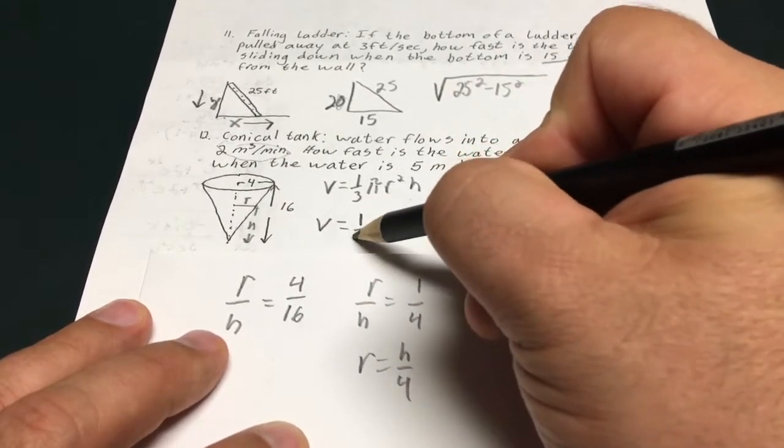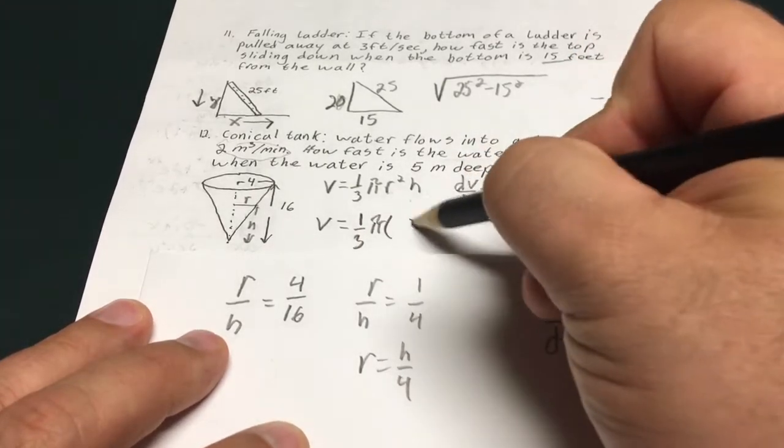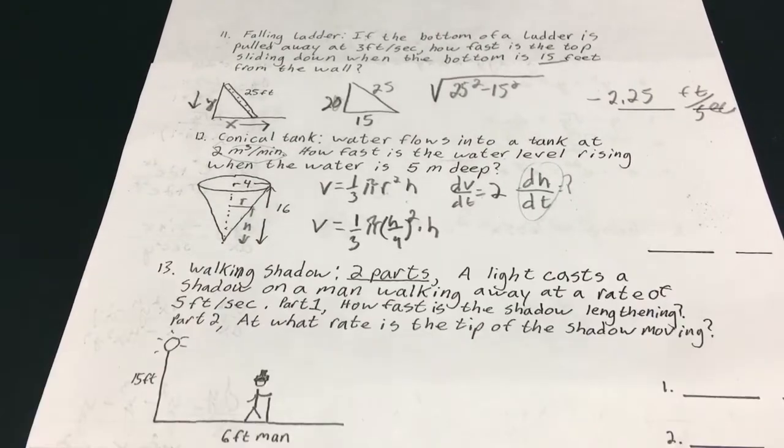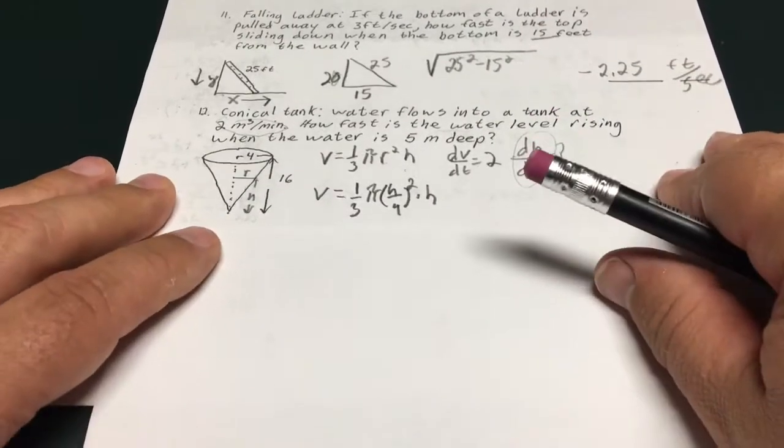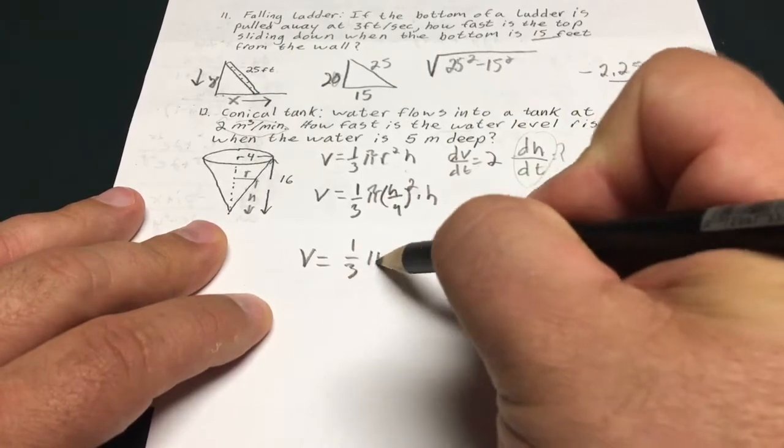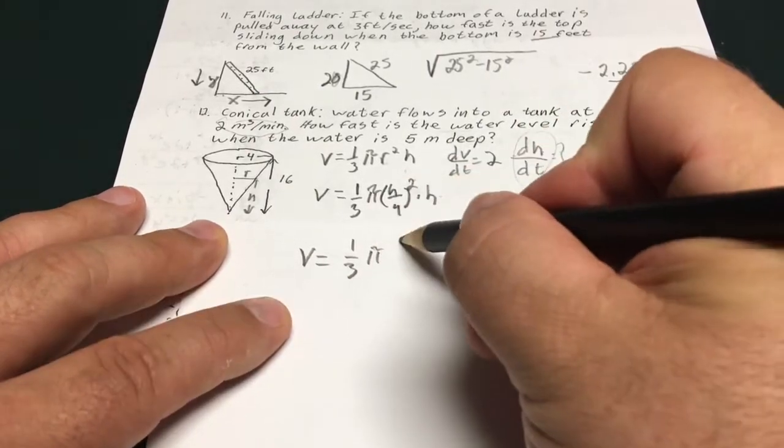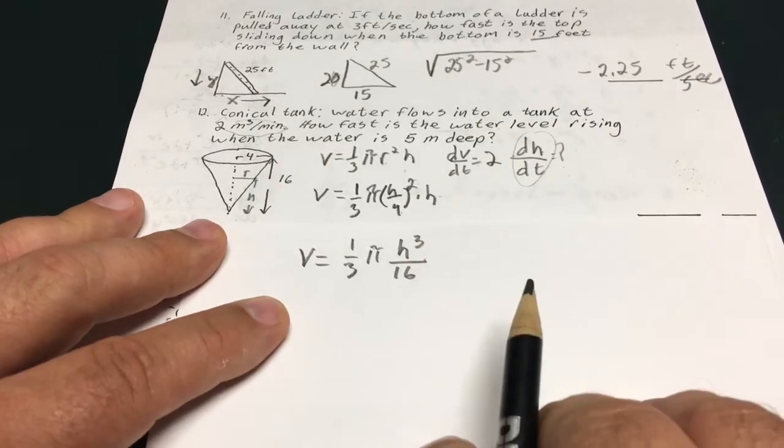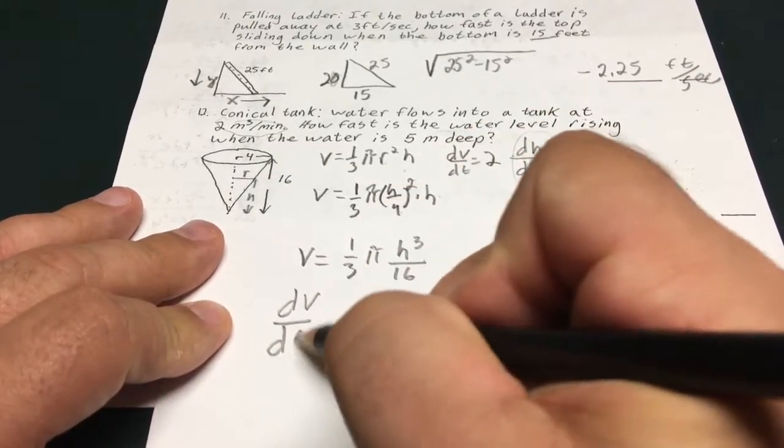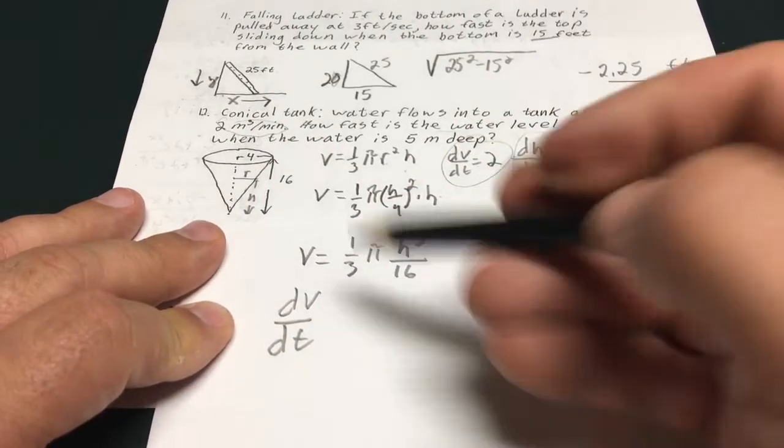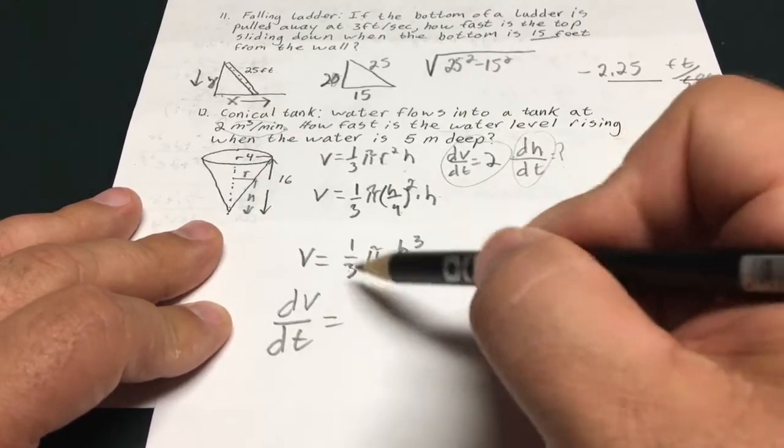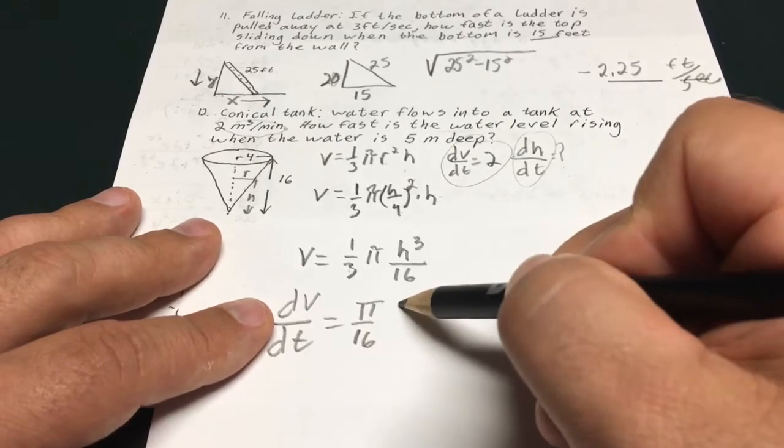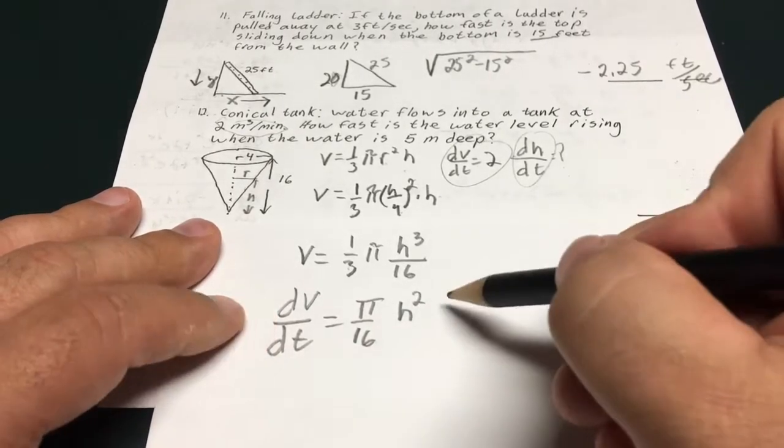So this is going to give me r equals h over 4. So my volume formula is going to be volume equals 1/3 pi times h over 4 squared times h. Now I'm going to roll with that and crisp this up a little bit. So my volume formula equals 1/3 pi h squared times h is h cubed over 4 squared 16. So let me take the derivative of this. So that's dv/dt, which I know is 2. Equals, when I do the 3 times the front, that's going to cancel out. pi over 16, h squared, dh/dt.